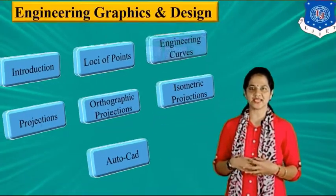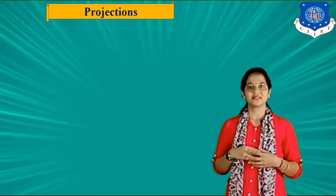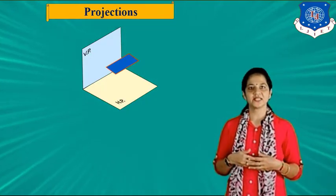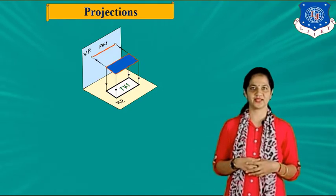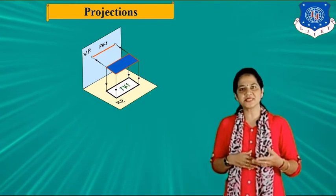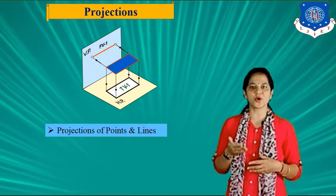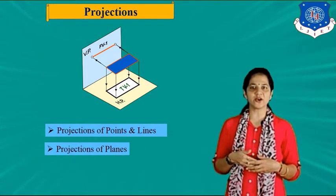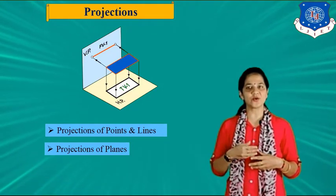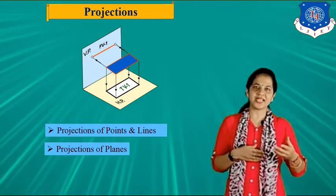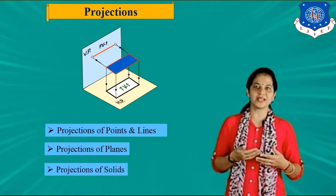Next topic is projection. What is projection? The representation of an object on the two-dimensional plane is called projection. It is very important topic of this subject. In projection, we will learn projection of points and lines, projection of planes like triangle, square, pentagon, hexagon, cone, rhombus, circle, ellipse, etc., and projection of solids like pyramid, prism, cone and cylinder.